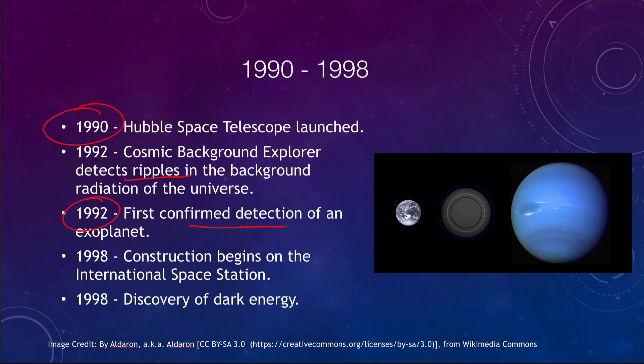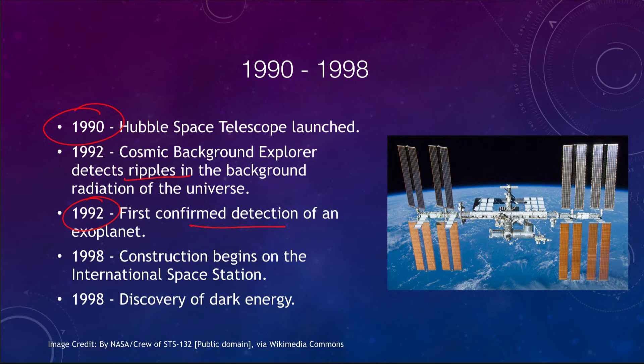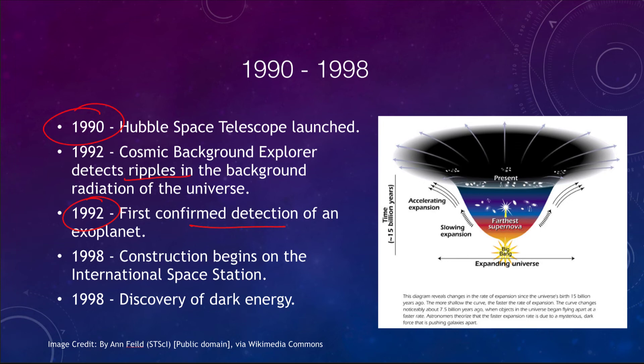In 1998, construction of the International Space Station began. Also in 1998, we made the discovery of dark energy, which was found to be causing the expansion of the universe to accelerate — meaning the expansion is increasing at an increasing rate. Velocities were slower in the past and are getting faster and faster. Dark energy, along with dark matter, make up about 96% of the mass and energy in the universe.